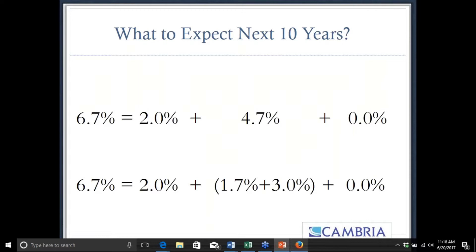A lot of companies have shifted to paying out more in buybacks than dividends, which artificially lowers the dividend yield but raises the dividend growth rate. Someone might argue the real dividend growth rate of 1.7% is too low and add a percent or two for buyback yield — but inflation is not 3% right now, so you'd need to subtract a percent or two from inflation. These roughly balance out, so we still end up at that 6.7% number even before looking at valuation.